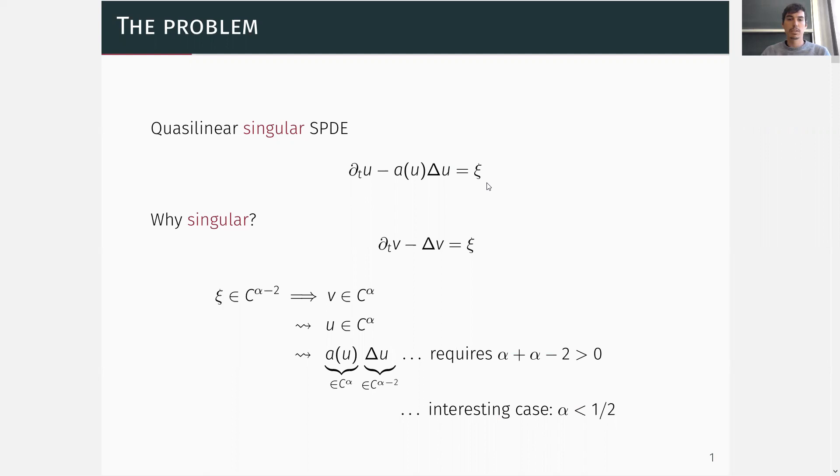For this, consider the linear pendant to the non-linear equation, which is just the stochastic heat equation. Assuming for a moment that the right-hand side lives in the Hölder-Besov space C^(α-2), the solution v to the linear equation then has regularity α by classical Schauder theory. Here, we equip space-time with an appropriate Carnot-Carathéodory metric.